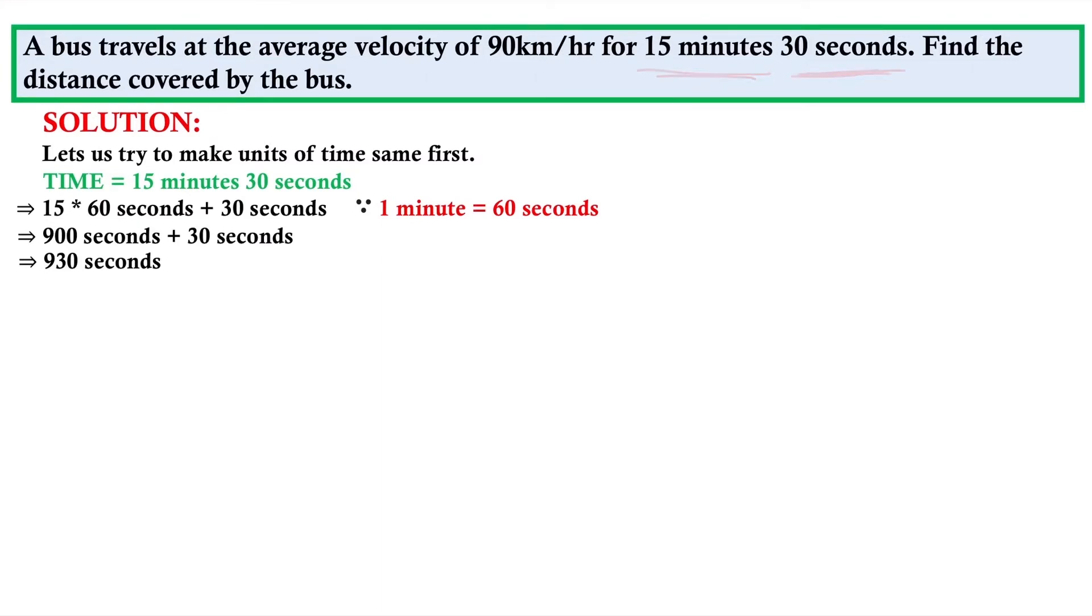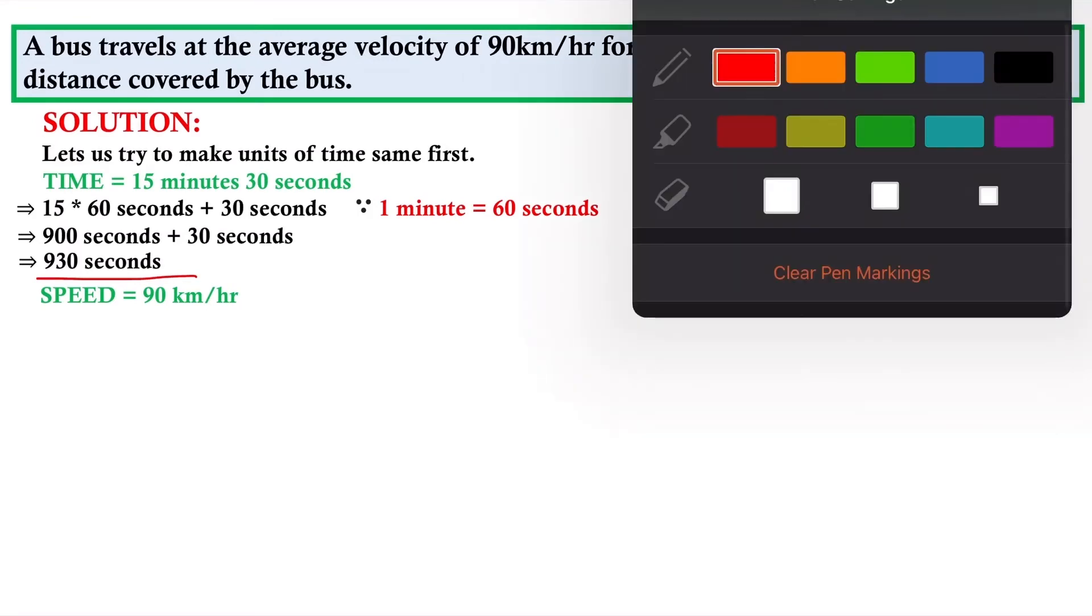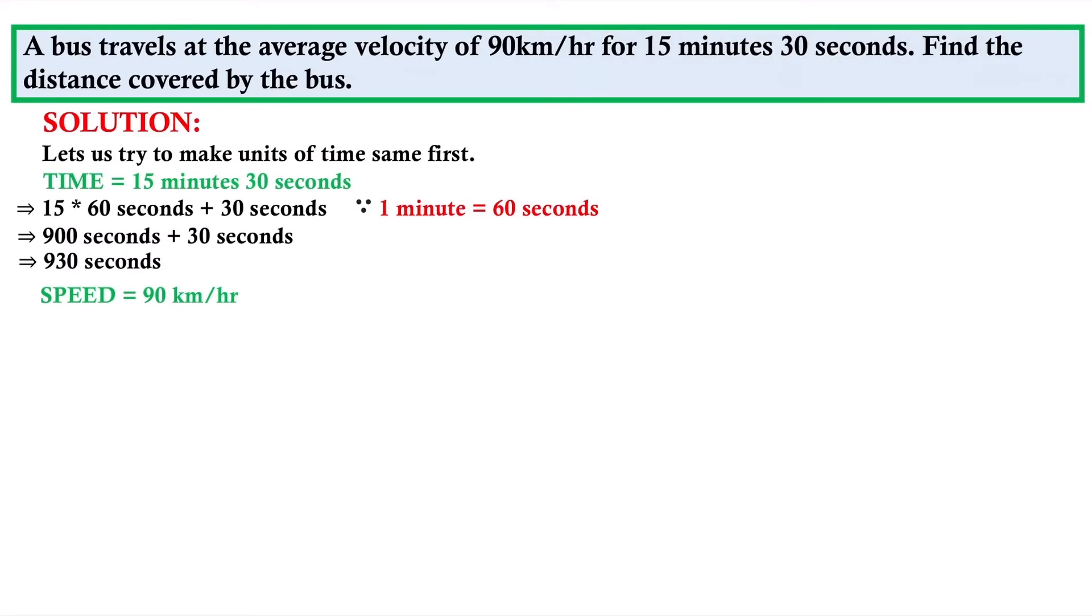The speed is 90 kilometers per hour. As we know, the standard unit for speed is meter per second. So what is the method to convert from kilometers per hour to meters per second? That is very easy, I will show you.